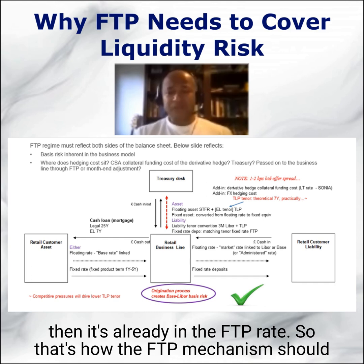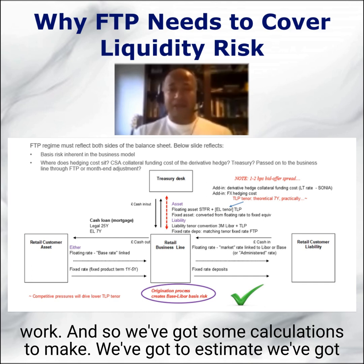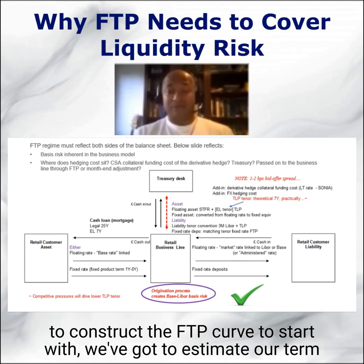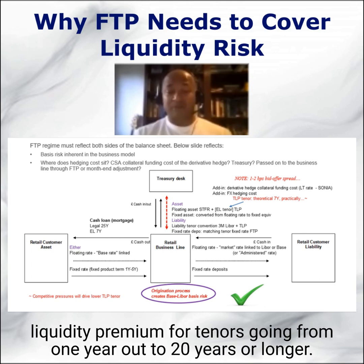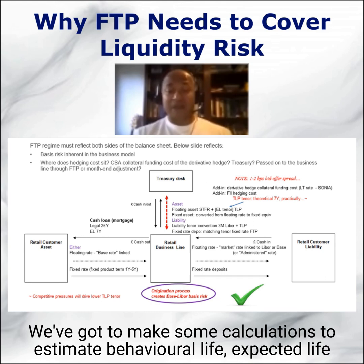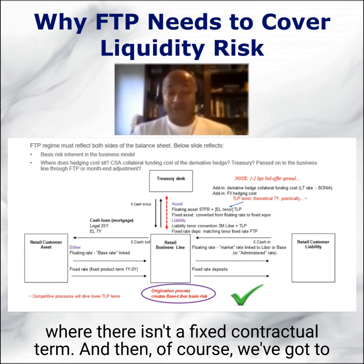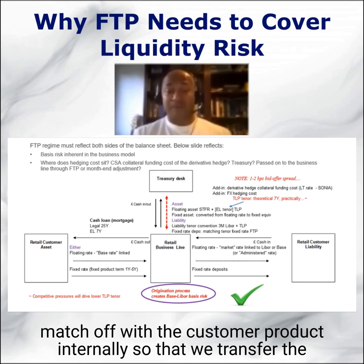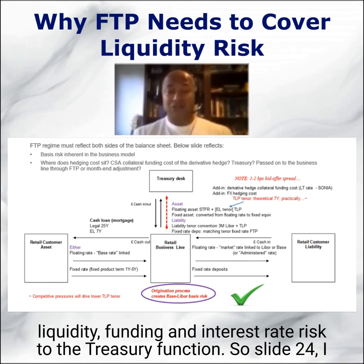So that's how the FTP mechanism should work, and we've got some calculations to make. We've got to construct the FTP curve to start with, we've got to estimate our term liquidity premium for tenors going from one year out to 20 years or longer. We've got to make some calculations to estimate behavioural life and expected life where there isn't a fixed contractual term. And then of course we've got to match off with the customer product internally so that we transfer the liquidity, funding, and interest rate risk to the Treasury function.